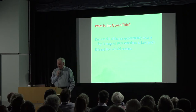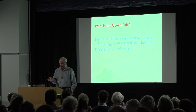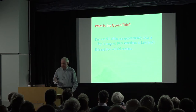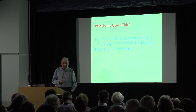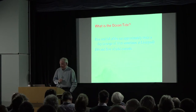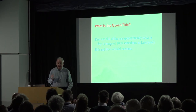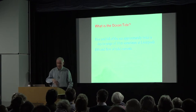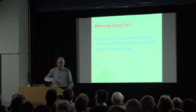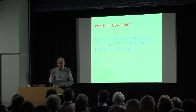What we mean by the ocean tide is the rise and fall of the sea about twice a day, with a range sometimes at Liverpool of about 10 metres. By the tide, we also mean the ebb and flow of tidal currents. Clearly, to raise the water level by 10 metres, you've got to have a current to bring the water in.